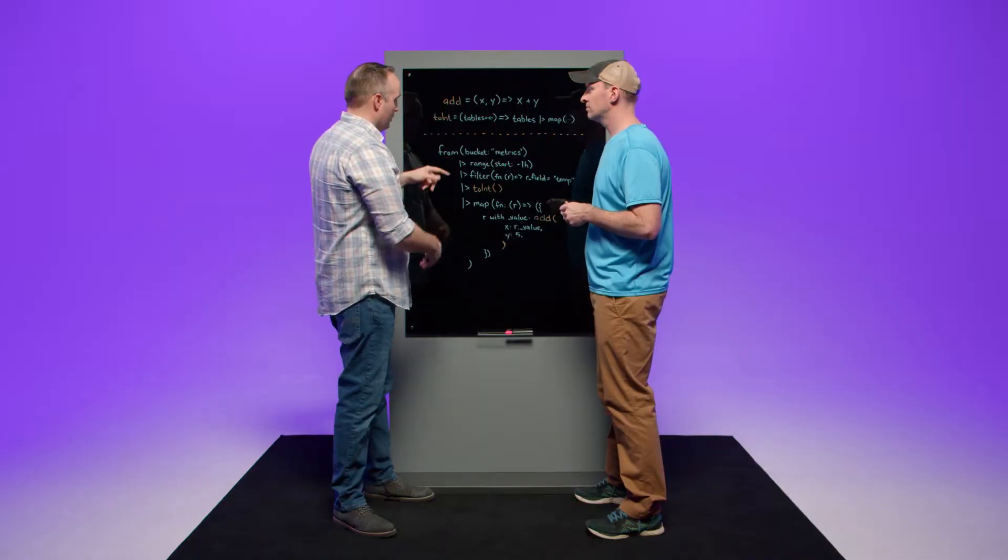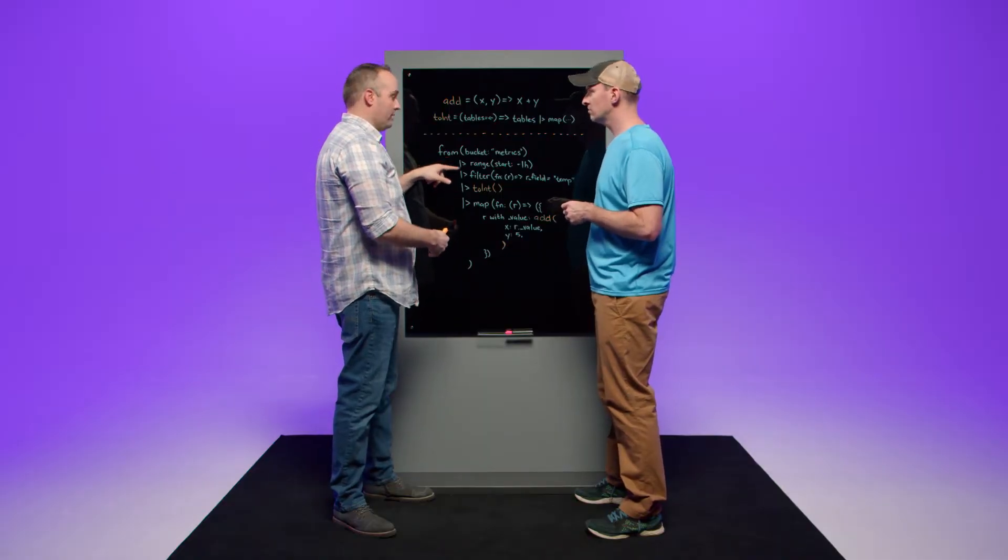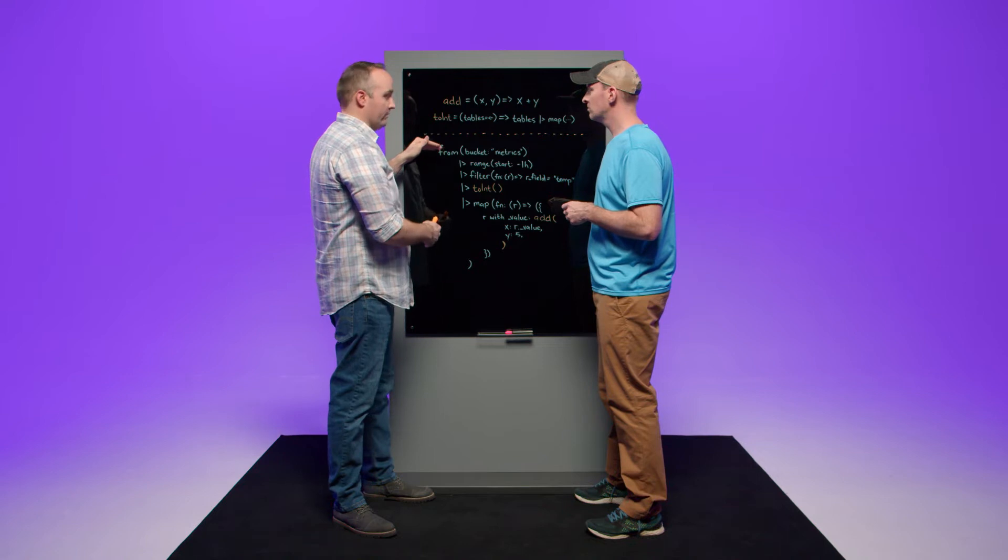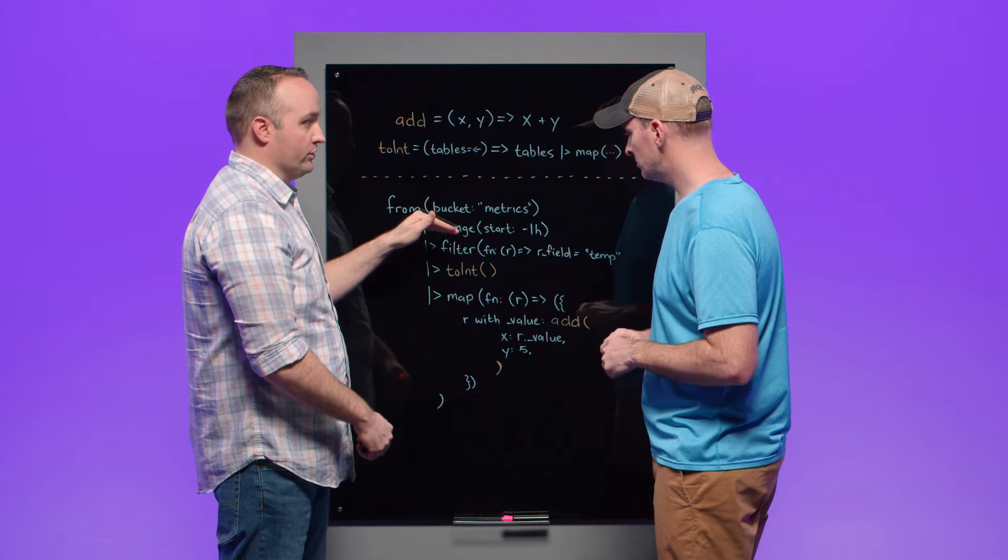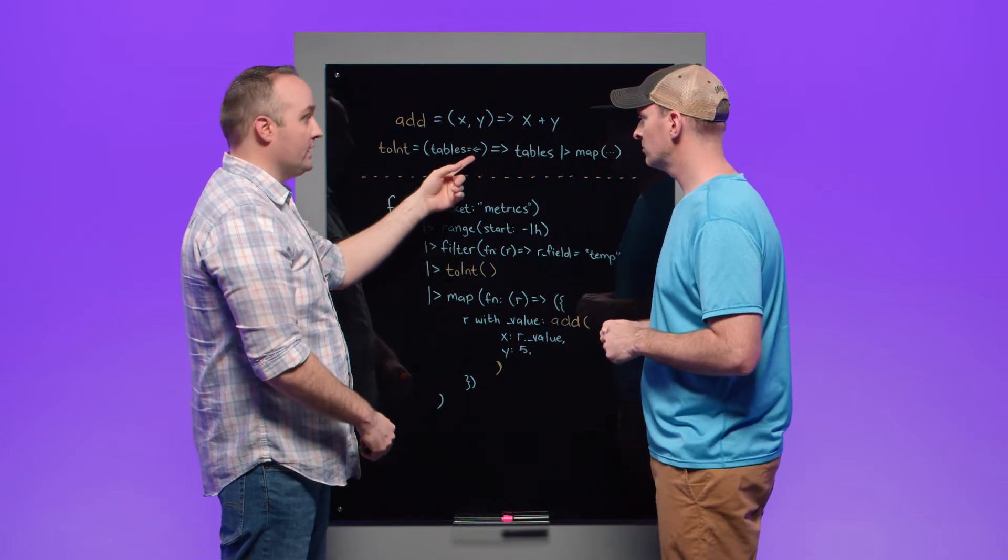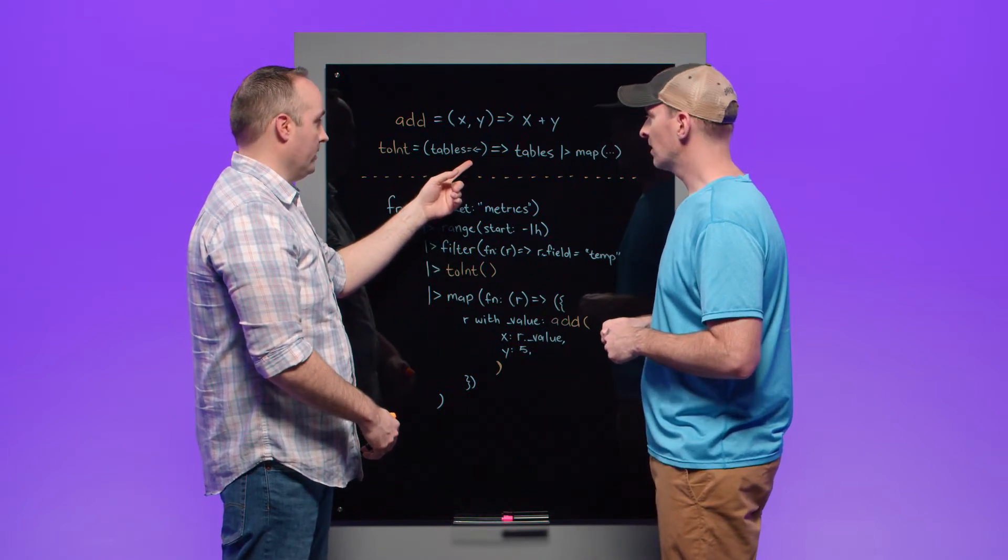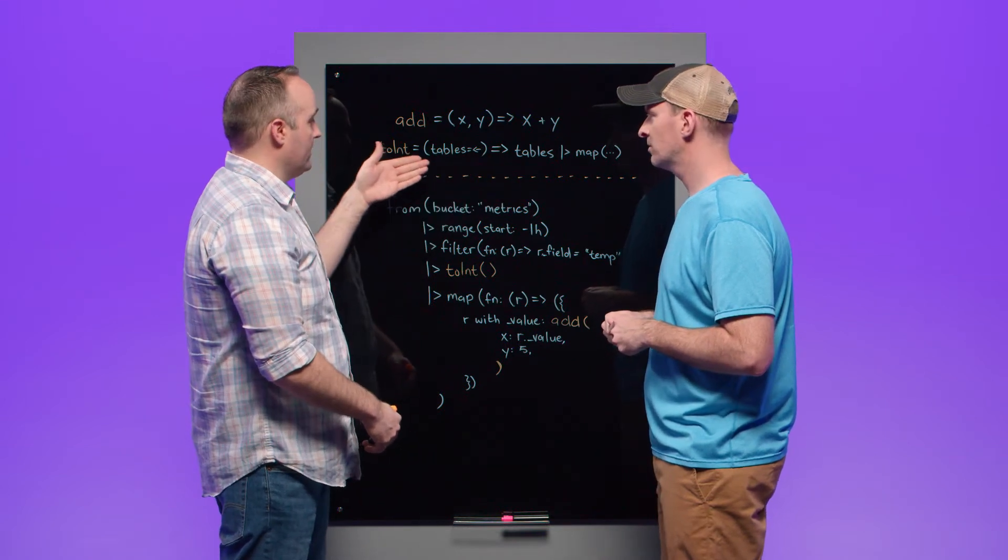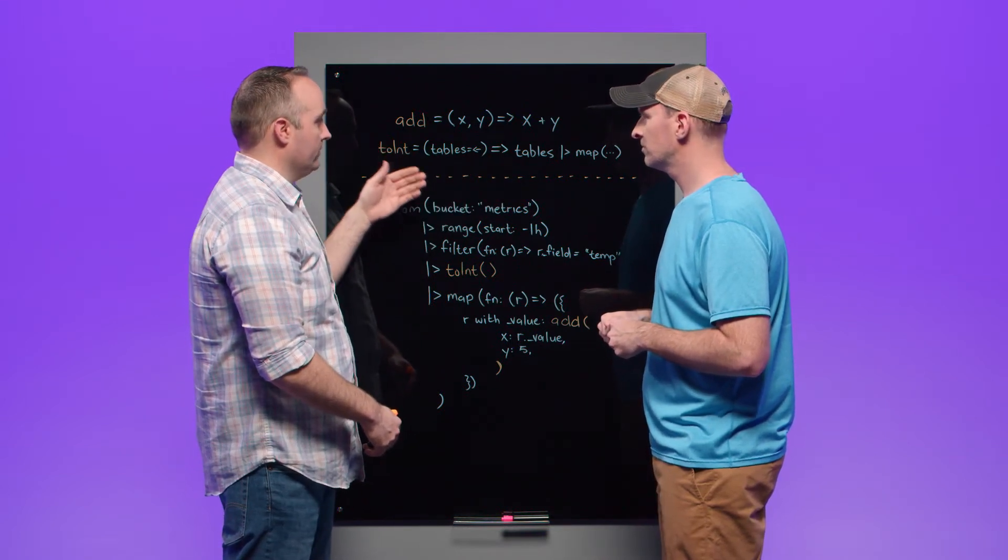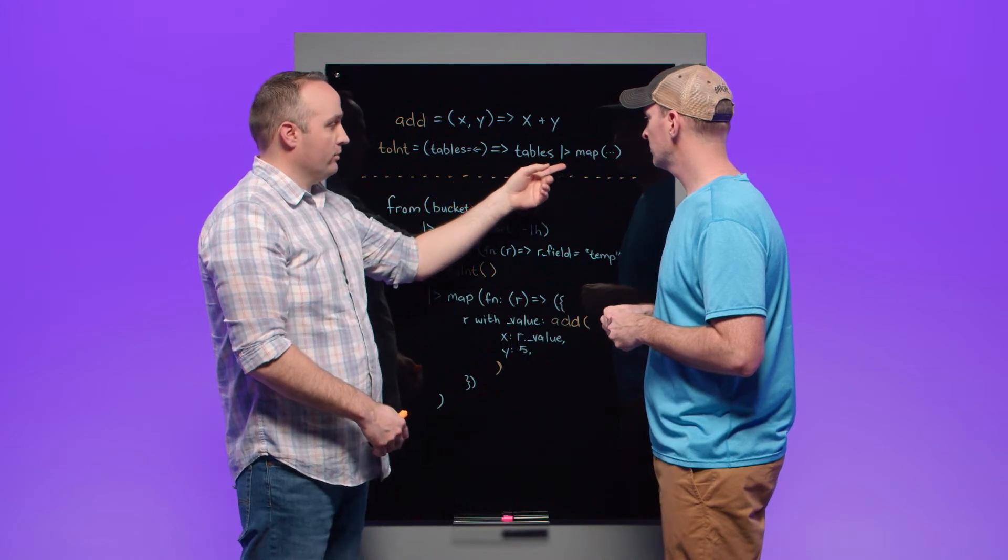This is important because it represents any data that is pipe forwarded into this function using the pipe forward operator. So if we look at this example query down here, this is our pipe forward operator and it takes output from the previous function. So order matters here. And it forwards that output into the next function as input and it's received by the pipe receive operator. So tables is going to represent anything that is pipe forwarded into the toint function. Tables then gets pipe forwarded into map, which is where the type conversion happens for all the values and converts them to integers.